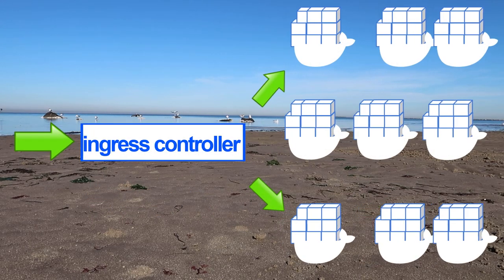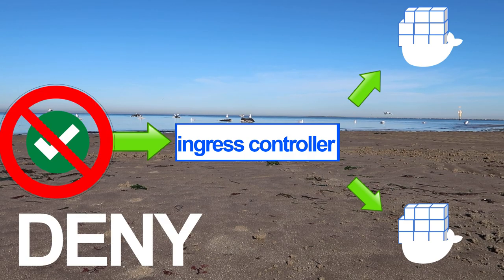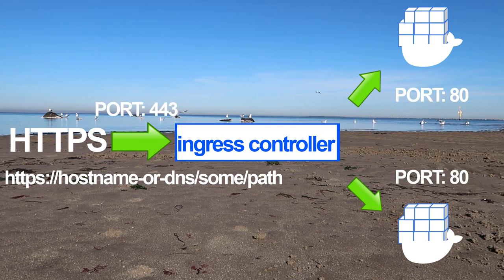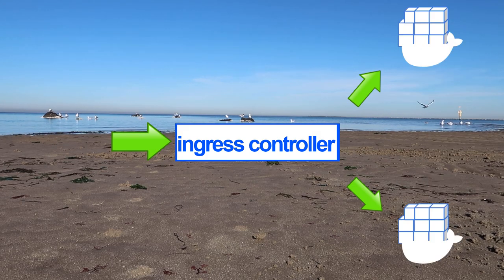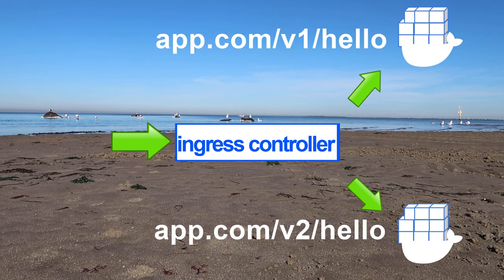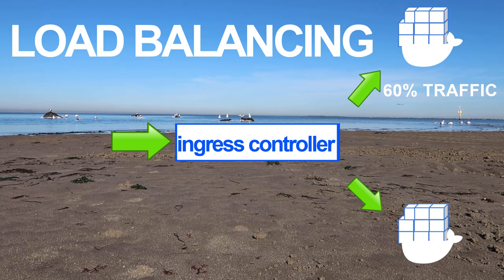Some call this a proxy, a load balancer, or an API gateway, but it doesn't matter — this is an ingress controller. An ingress controller is responsible for a few potential things: accepting or denying HTTP traffic, SSL termination (accepting traffic on port 443 via TLS but routing to a different port for private applications), routing traffic based on rules, URL rewriting based on the URL path, and load balancing — deciding, for example, whether 60% of traffic goes to instance A and 40% to instance B.